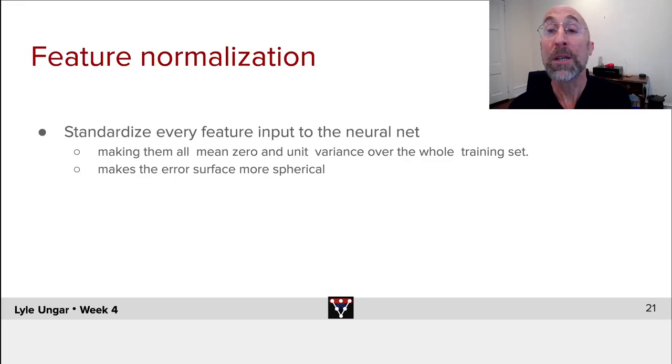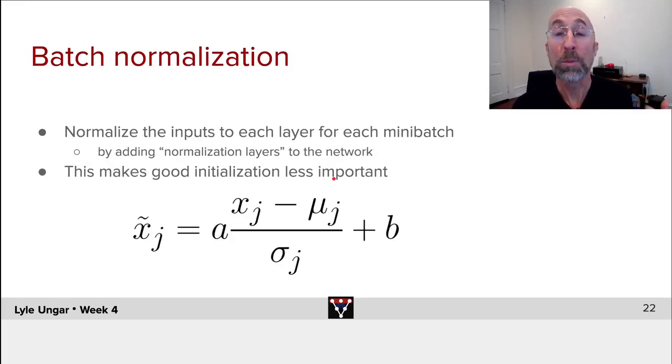Now, beyond just doing normalization of the inputs, one can also take the output of each layer, or if you will, the input to the next layer, and take every number that is output, x sub j, one for each of the outputs,